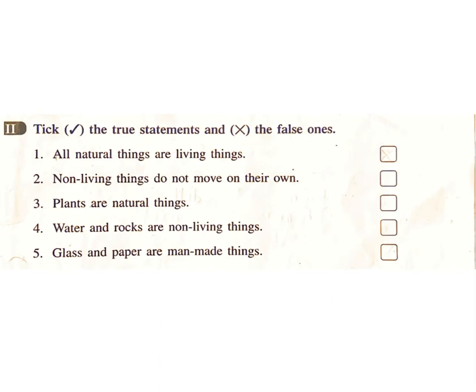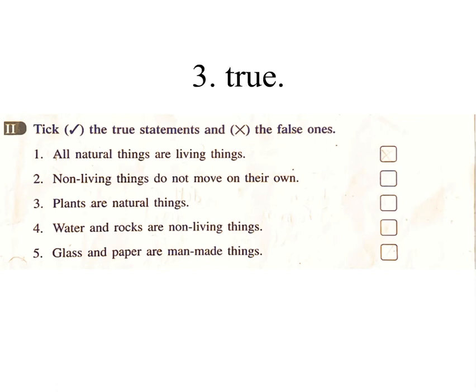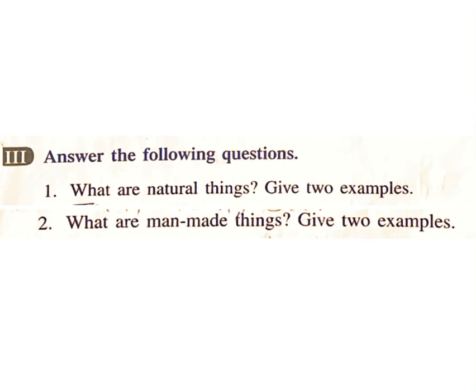Tick the true statements and cross the false ones. 1. All natural things are living things. Answer: False. 2. Non-living things do not move on their own. Answer: True. 3. Plants are natural things. Answer: True. 4. Water and rocks are non-living things. Answer: True. 5. Glass and paper are man-made things. Answer: True.